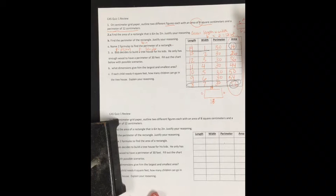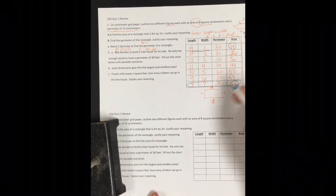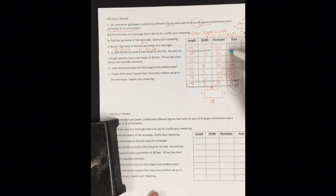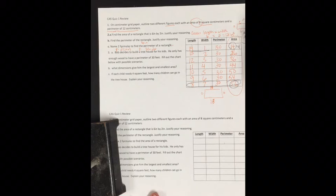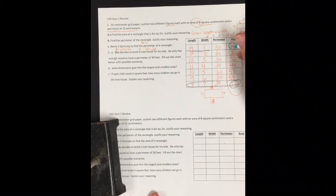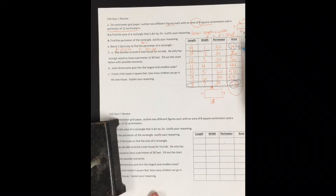If each child needs 4 square feet, how many children can go into the treehouse? Explain your reasoning. If each kid needs 4 square feet, we take the number of square feet and divide by 4. If it's not a whole number, it doesn't count. For instance, 4 doesn't go into 14, but goes to 12 three times, with a remainder of a half or 0.5. We can't say 3.5 kids, so the most would be 3.